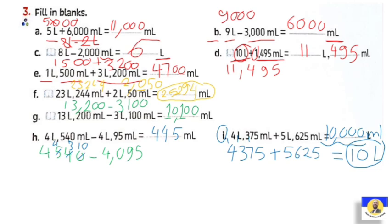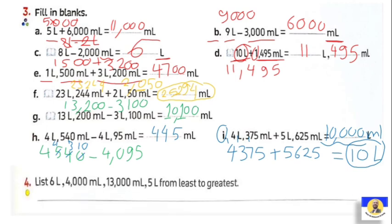Question number four: list from least to greatest. First, convert all units to the same unit. Convert mL to liters by canceling three zeros: the values become 4 liters, 13 liters, 5 liters, 6 liters. Order from smallest to greatest: 4, 5, 6, then 13.